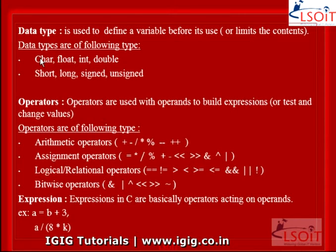Character is used to define characters. Float is used to define floating point numbers, like decimal numbers or fraction numbers. Int is used to define integer numbers. Double is used to define big floating point numbers — it reserves twice the storage for the number, यानी ये दुगनी memory allocate करता है किसी भी variable के लिए.